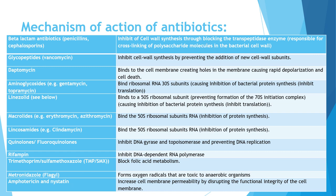Another antibiotic that works on the cell wall is vancomycin. Vancomycin works by a slightly different mechanism, but it still targets the cell wall. It prevents the addition of new cell wall by inhibition of transglycosylation and transpeptidation. So we have two antibiotics that work on the cell wall: the beta-lactam antibiotics and vancomycin.